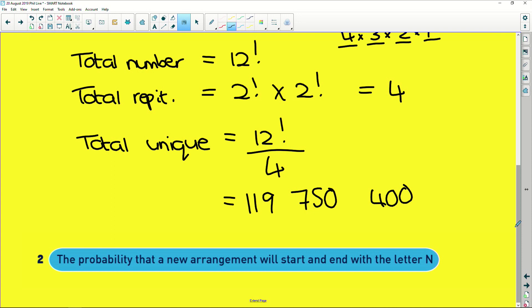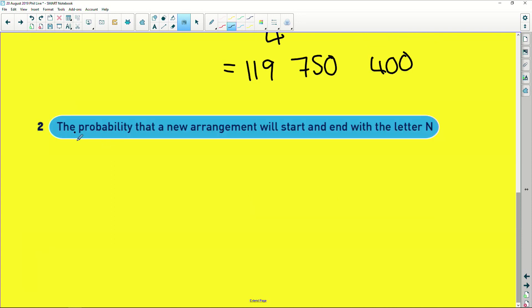So let's look at question two. It says determine the probability. Remember, very important, it's not a big number. It's going to be a number over another number. The probability that a new arrangement will start and end with the letter N. This is where it gets tricky as well. They make no mention of out of the possible rearrangements, out of the unique rearrangements. So that first question is a standalone. It's basically testing whether or not you understand what unique means.